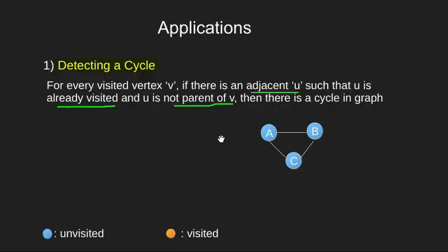Now here parent simply refers to the node from which we are just coming from. Let's run depth first search for this graph. We start with vertex A and visit it. Then we move to the adjacent unvisited node B and we visit it.